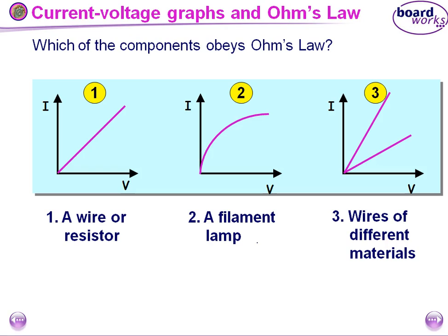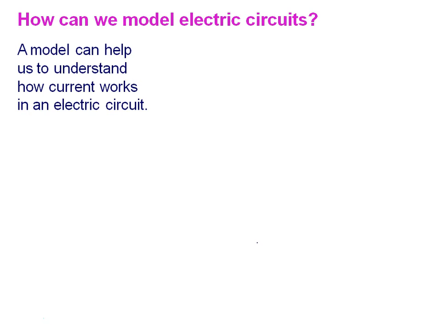Which of the components does not obey Ohm's law? Here for a straight line graph — and also for a wire of different material giving a straight line graph — Ohm's law is obeyed. The bulb, with its curved graph, does not.